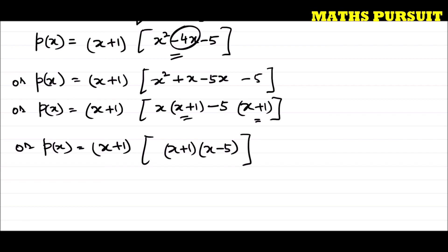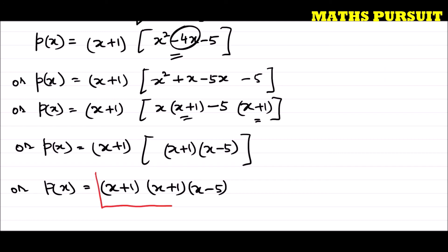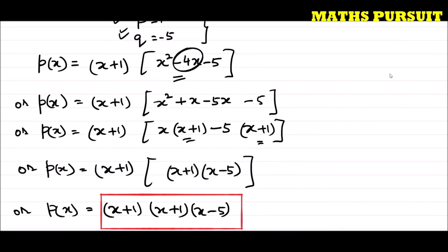So we are able to find out three factors: x plus 1, x plus 1, and x minus 5. These are the three factors we were looking for. This method is a little lengthy, but if you know any shortcut method, feel free to use it.